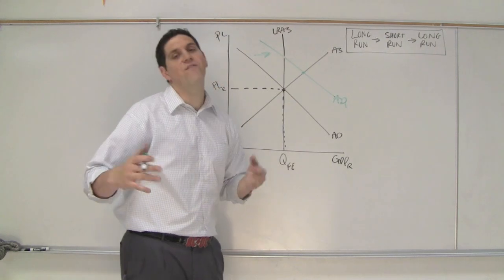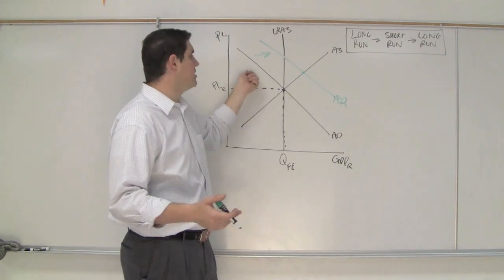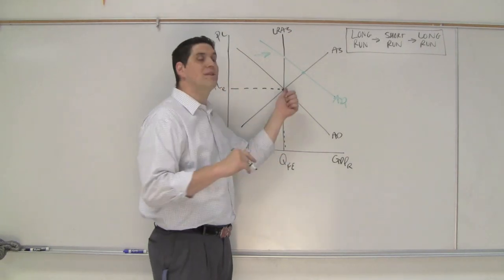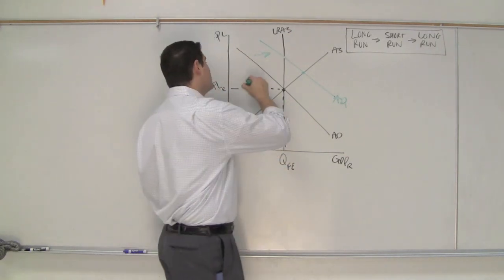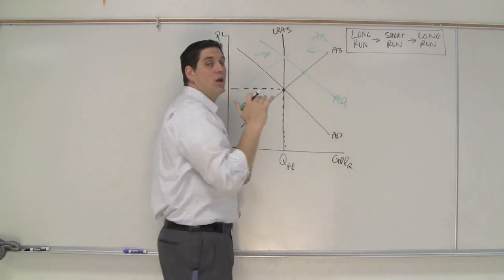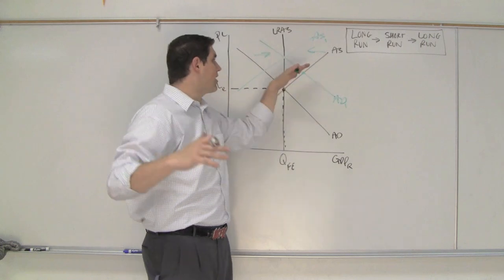In the long run eventually wages will go up. Right now if we have inflation there's higher prices. Workers are going to demand higher wages. In the long run if they get higher wages what happens to aggregate supply? Well it shifts to the left. Aggregate supply would decrease when workers get their higher wages and the resource prices go up. Aggregate supply shifts to the left.